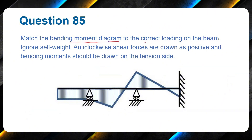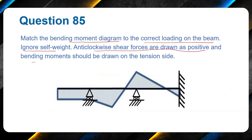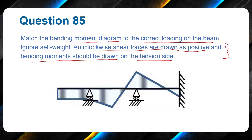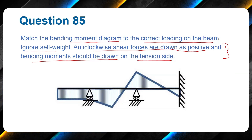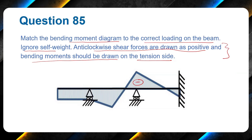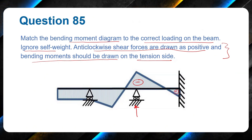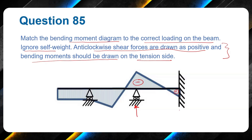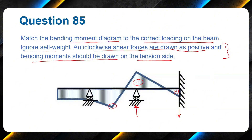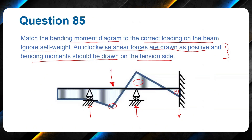The first problem is about matching a bending moment diagram to the correct loading on the beam, ignoring self-weight. Anti-clockwise shear forces are drawn on the positive side and bending moments on the tension side. First we determine the direction of reactions. We have hogging moments here, so reaction should be upwards. We have sagging here, so the reaction causing sagging should be downwards.